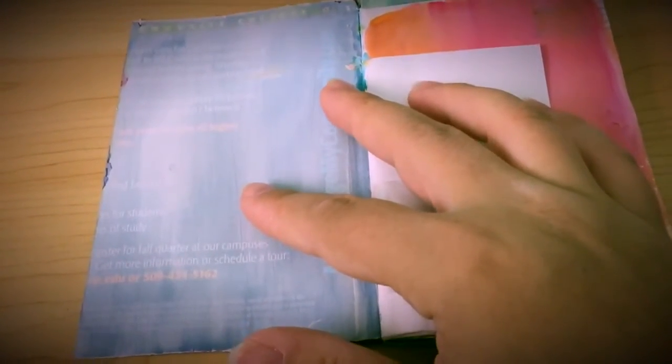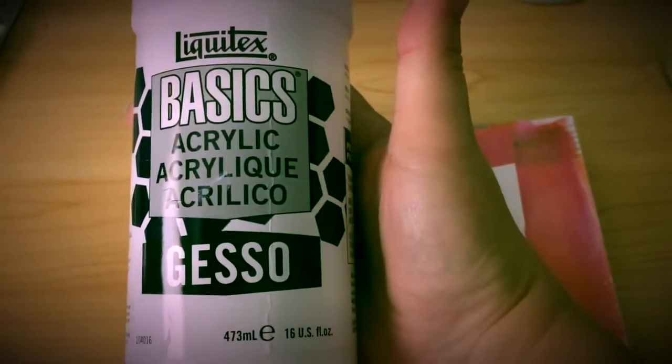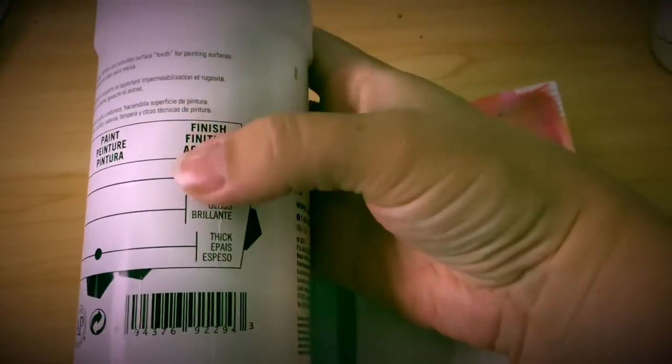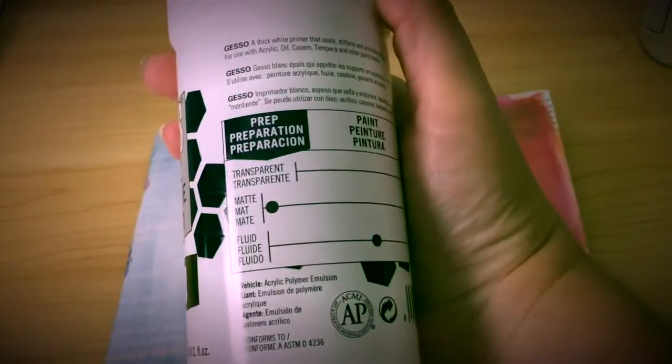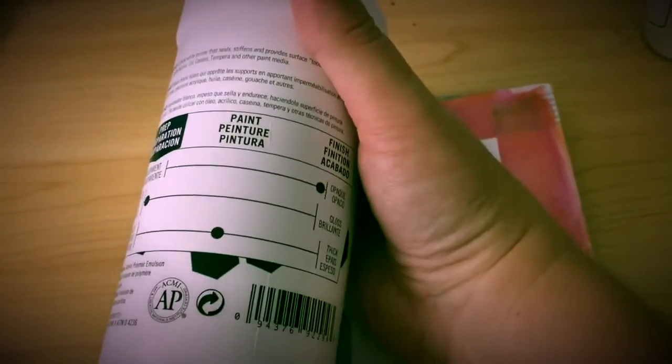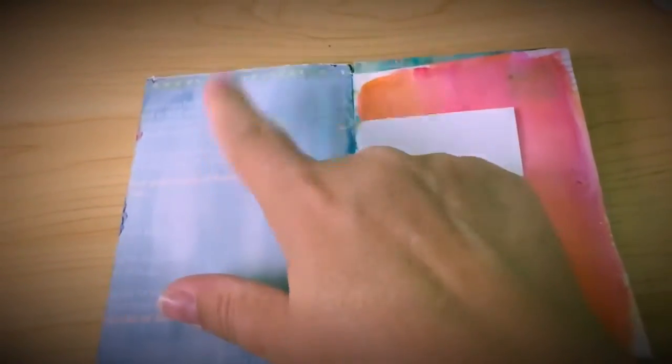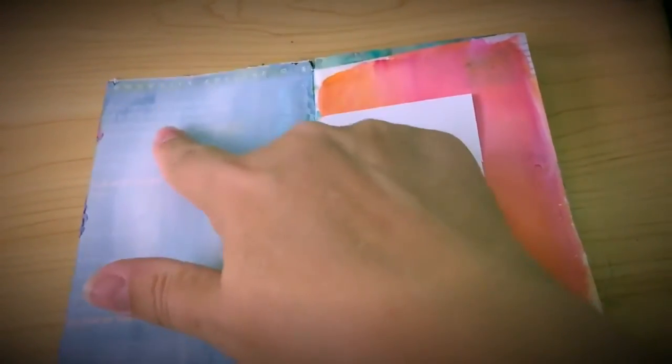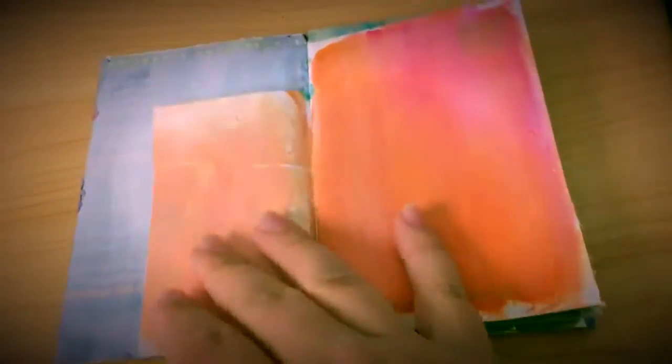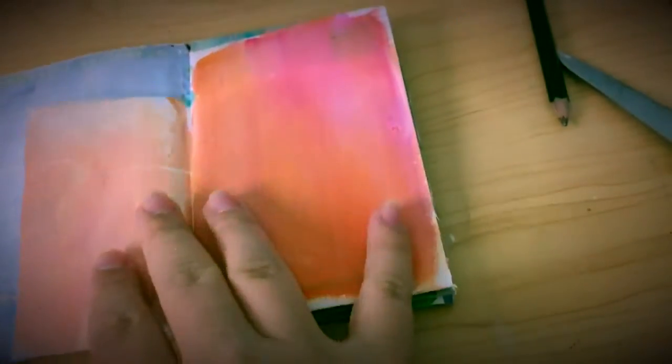I used this gesso and it is pretty opaque matte finish and not too thick. What I will do with this is I will put the distress stains on here and then I'll gesso over it again with white and it will end up looking similar to this.